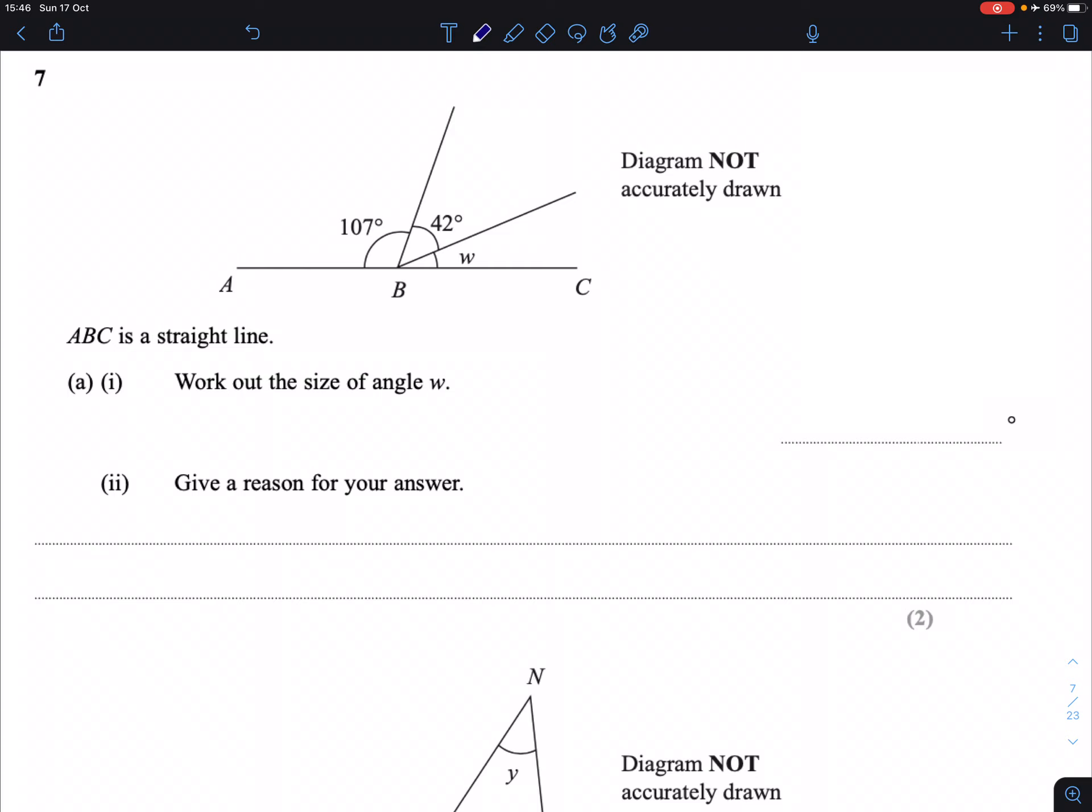Well, W is what's left over to make this a straight line angle. Straight line angles add up to 180 degrees. So 107 plus 42 plus something is going to equal 180.